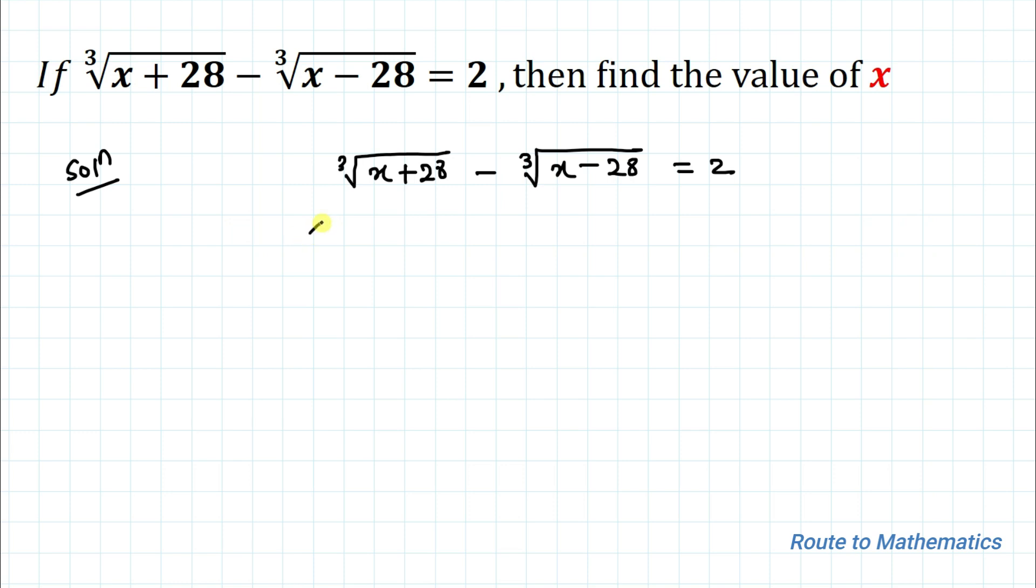In the first step let's take a equals cube root of x plus 28 and b equals cube root of x minus 28. So our equation becomes a minus b equals 2.